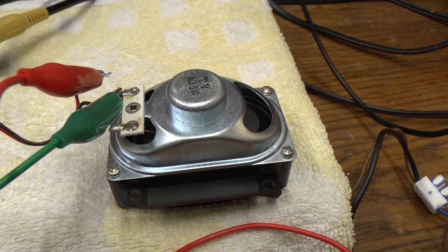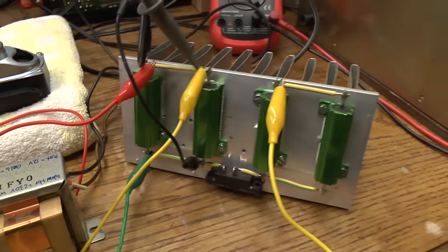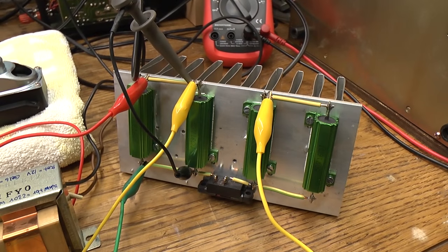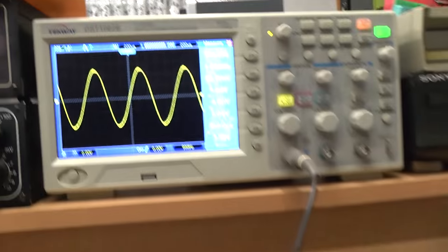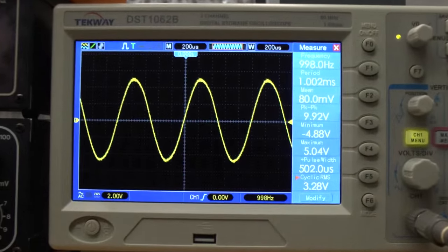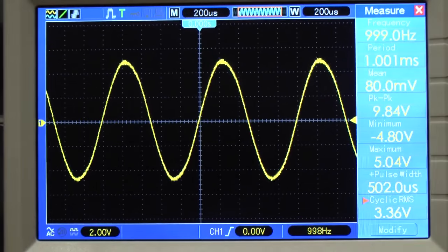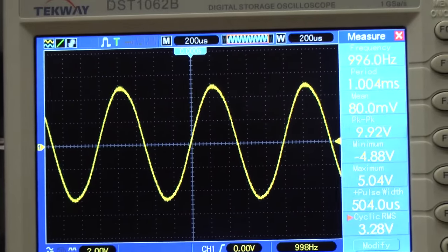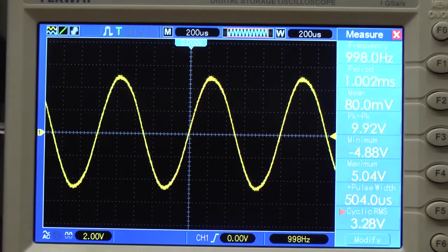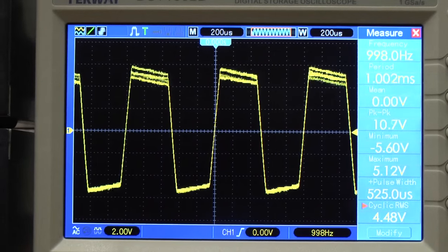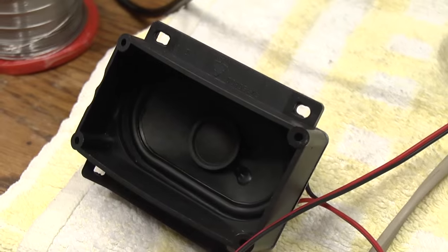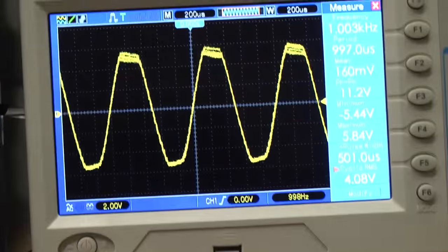I now have one of the speakers disconnected and replaced with a 4 ohm load resistor. And hooked up in parallel to that is the oscilloscope now monitoring the output signal. And as you can see, we can get pretty nice distortion even on a 1 kilohertz sine wave if we just turn it up high enough. And you can hear the distortion on the other speaker that is still hooked up.